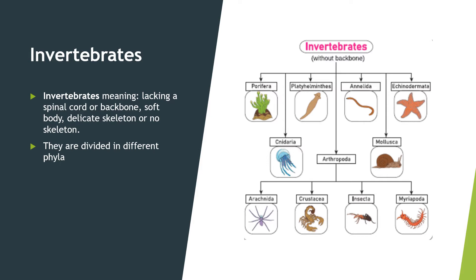The invertebrates are divided into different phyla. In the last class I gave a brief idea. They are: Porifera, Platyhelminthes, Cnideria, Arthropoda, Annelida, and Echinodermata. Arthropoda will be subdivided further. Now we will see each one individually.